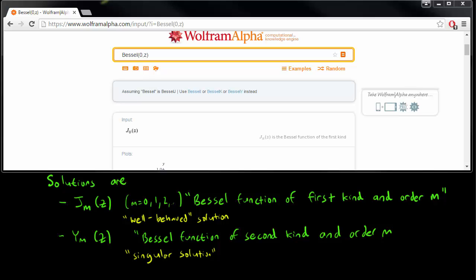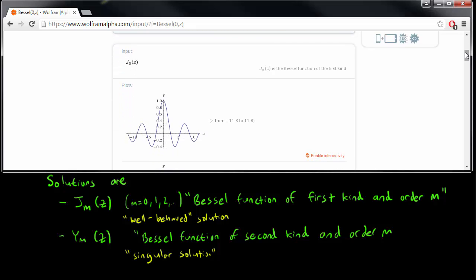So here on Wolfram Alpha, if you type Bessel 0z, where 0 is the m, so here we got J_0(z) where m equals 0. And Wolfram Alpha will let you look at what the Bessel function looks like.